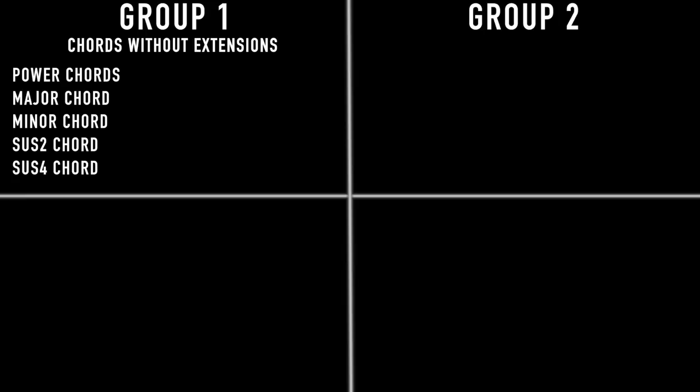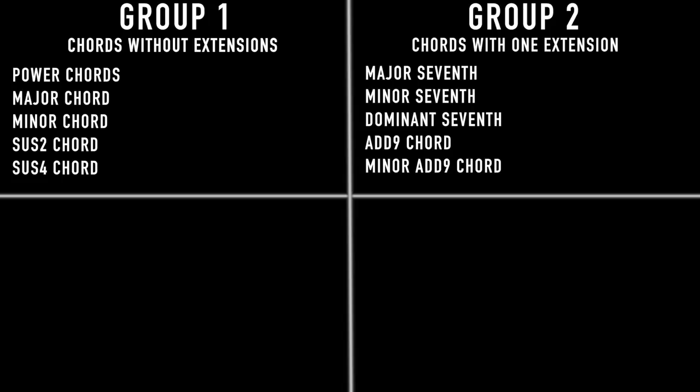We can break down these chords into four big categories. Category number one: chords without extensions — power chords, major chord, minor chord, sus2 and sus4. Group two: chords with one extension — major and minor 7 chord, dominant 7 chord, add9, minor add9, add11, minor add11, and the 6 chord.